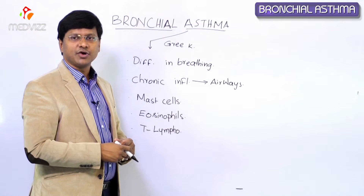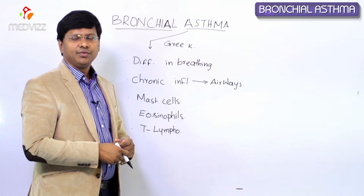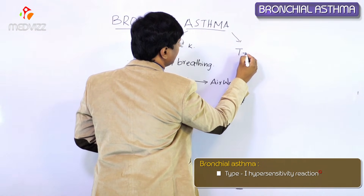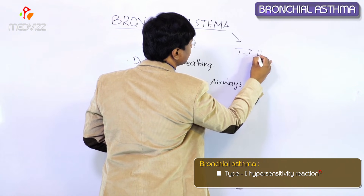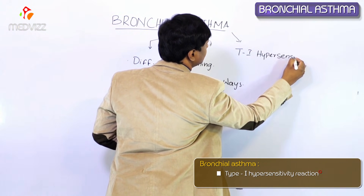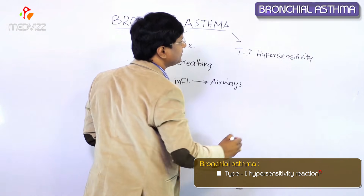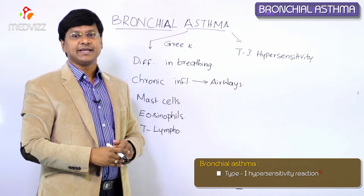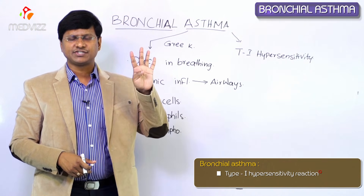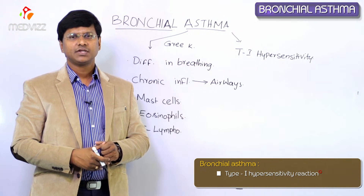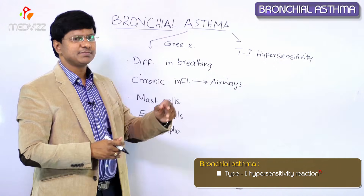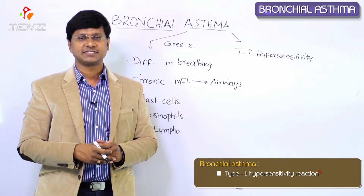Bronchial asthma is a type of type 1 hypersensitivity reaction. If you take hypersensitivity reactions, we have four types. Out of these four types, bronchial asthma is a type 1 hypersensitivity reaction.